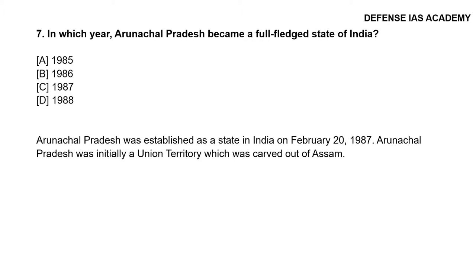Question 7: In which year did Arunachal Pradesh become a full-fledged state of India? The correct answer is option C, 1987. Arunachal Pradesh was established as a state in India on February 20, 1987.